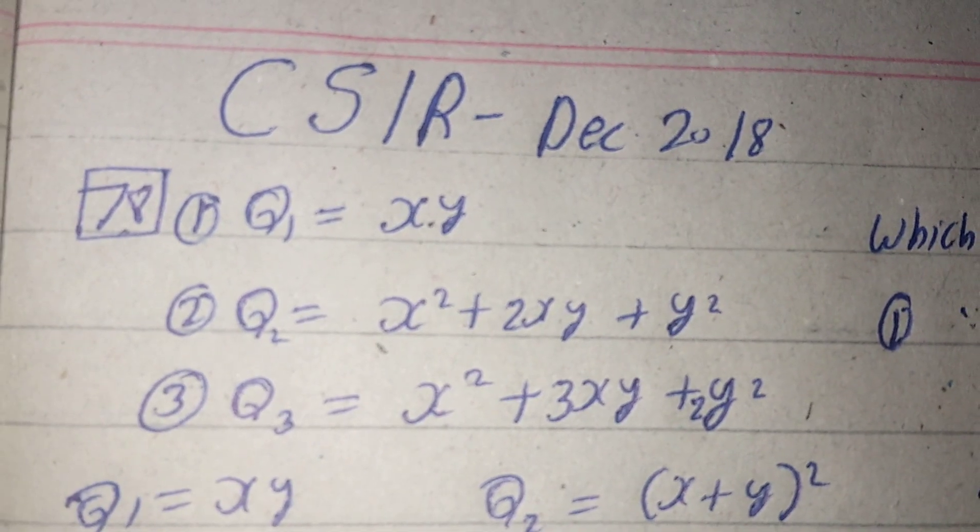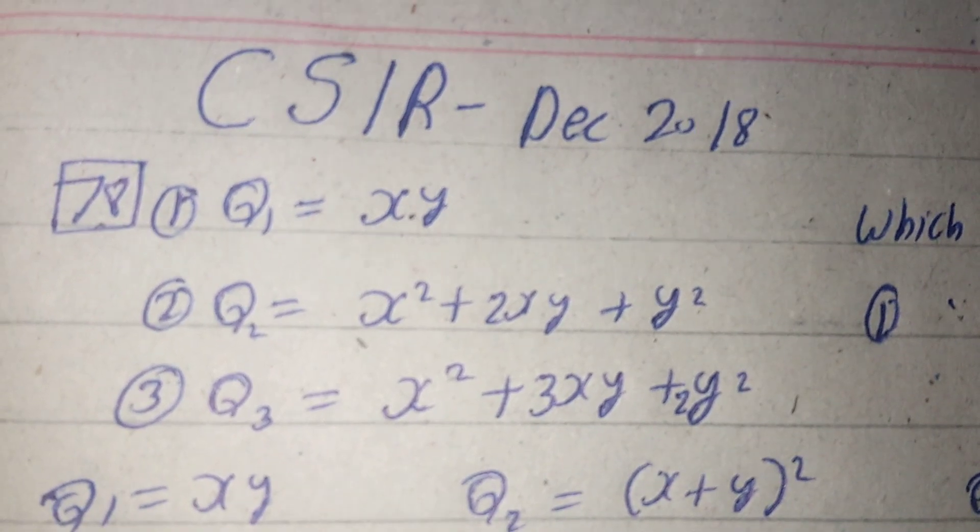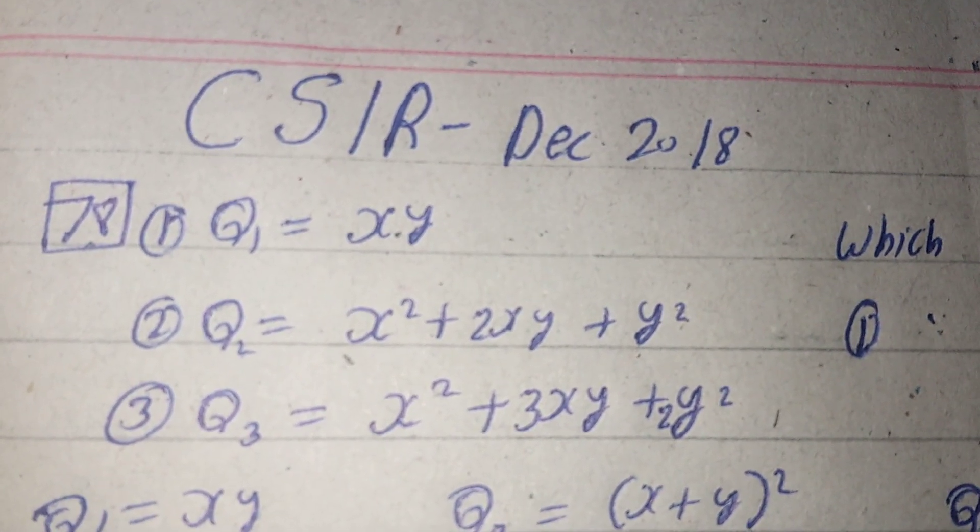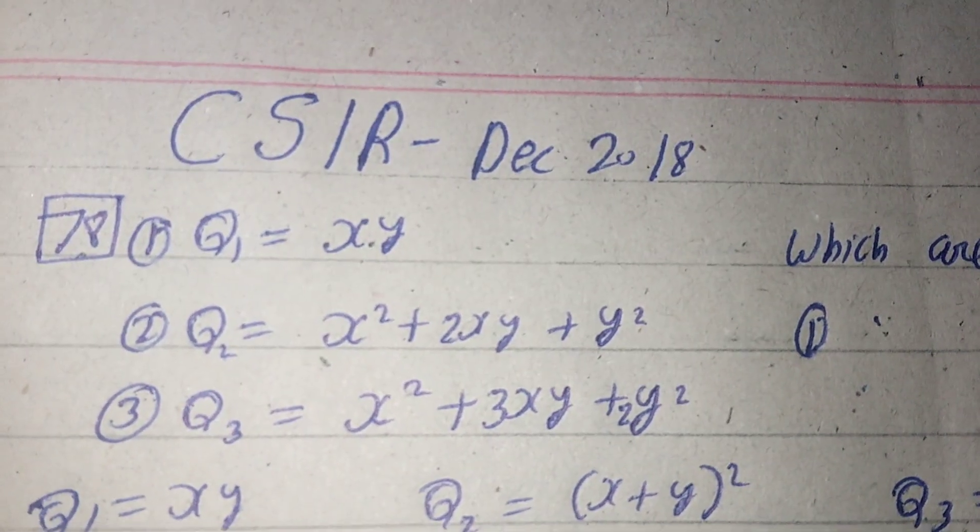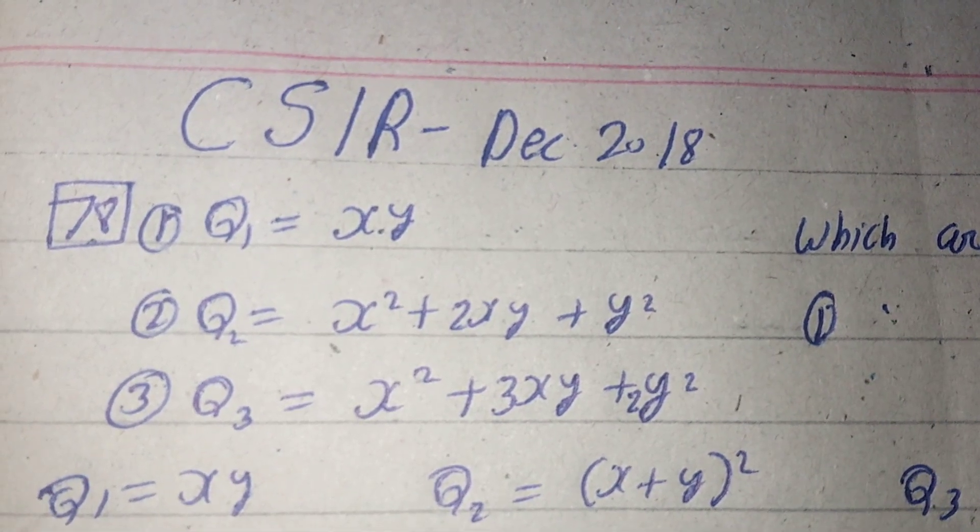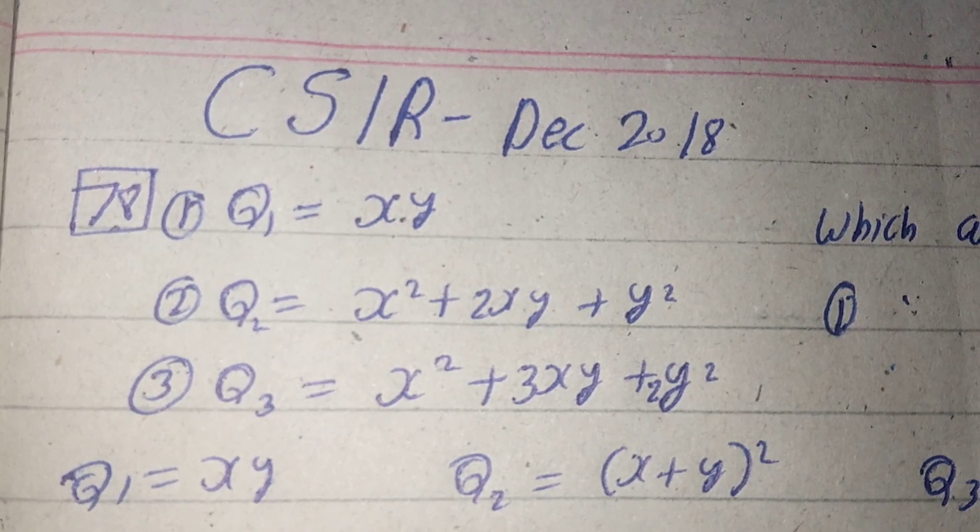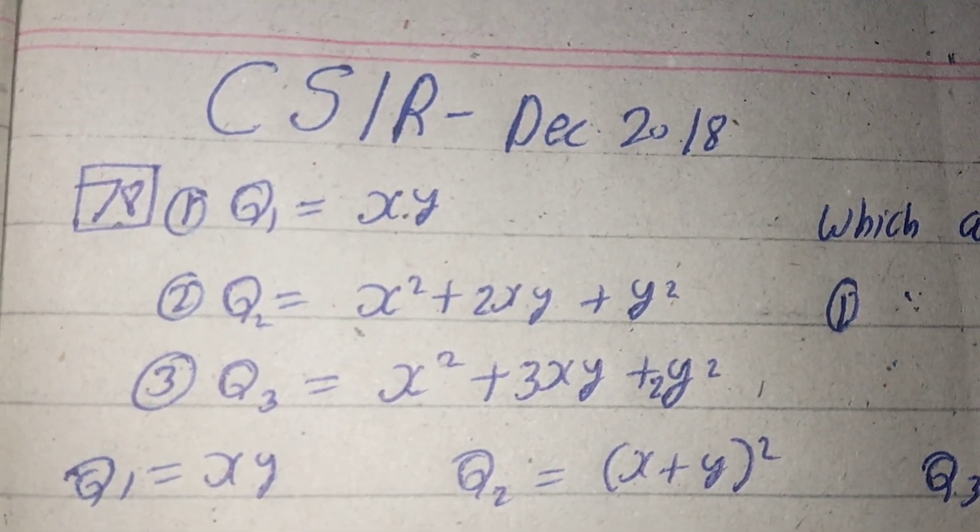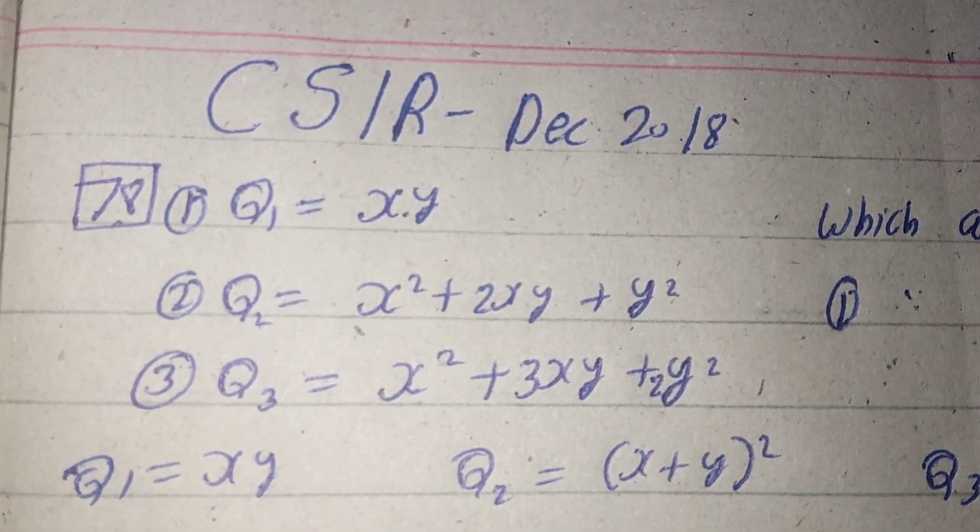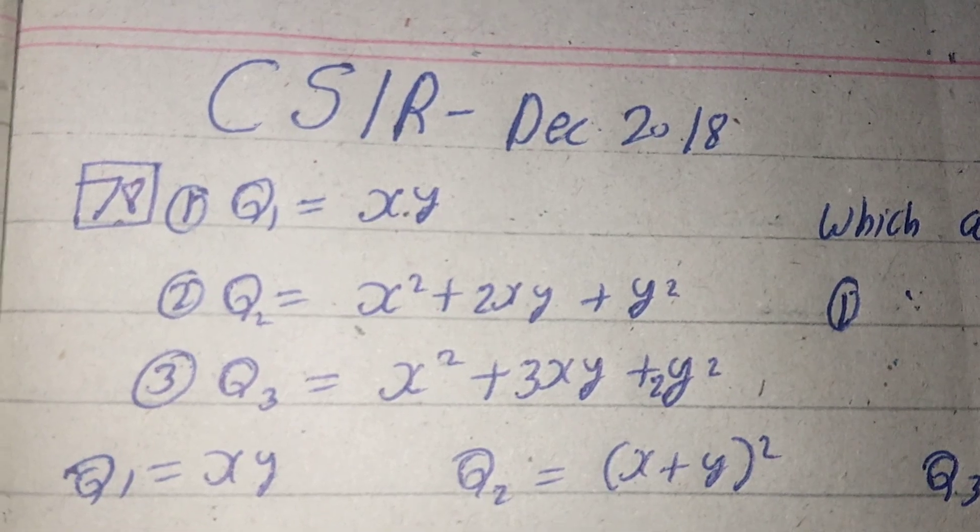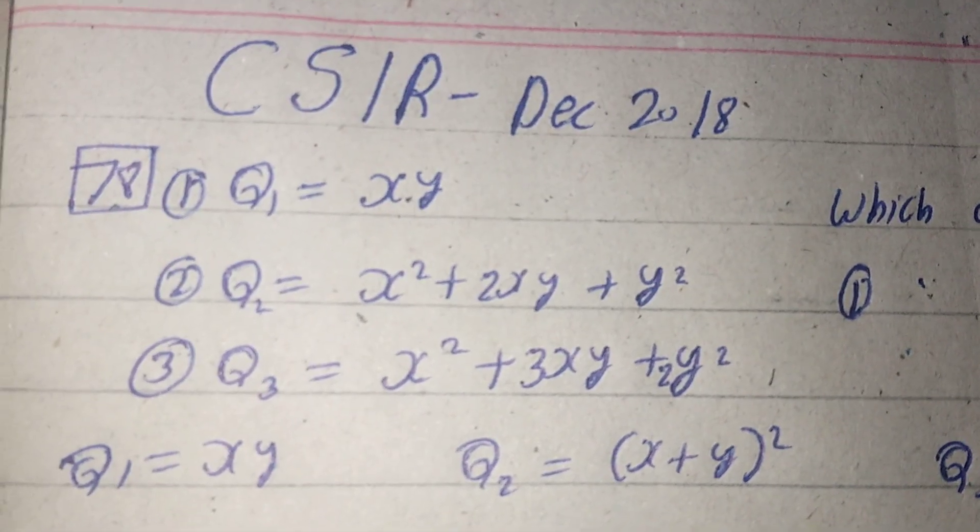If we look at these quadratic forms, we have to make inspections about how they behave when x and y vary over all real numbers—whether they always attain positive values, always negative values, or mixed.